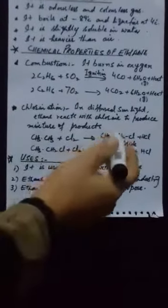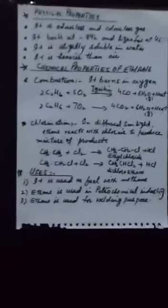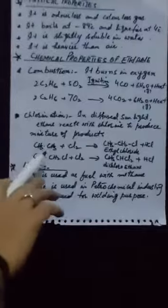In the diffused sunlight, ethane reacts with chlorine to produce ethyl chloride with hydrogen chloride.